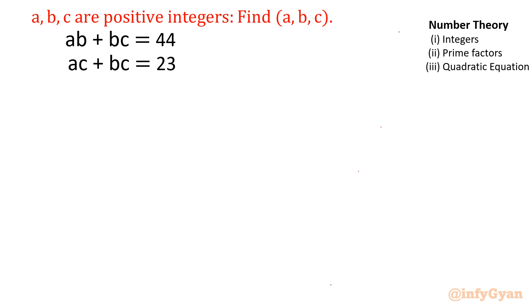Question is, find number of triplets where a, b, c are positive integers. Equations are ab plus bc equal to 44, ac plus bc equal to 23.